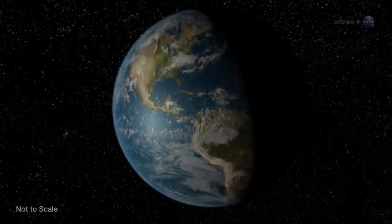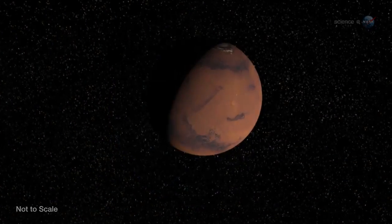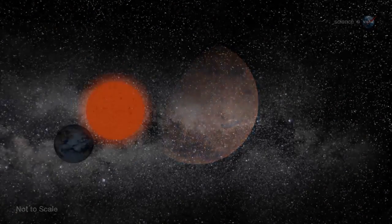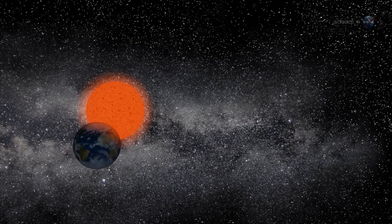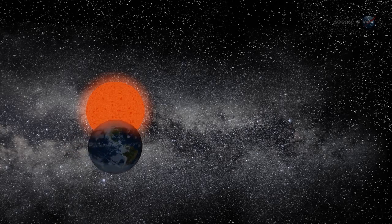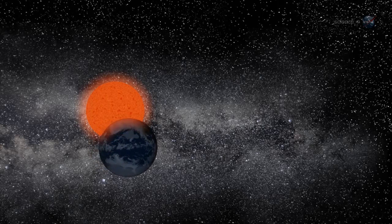Mercury, Venus, Earth, and possibly even Mars could be engulfed. The fate of Earth is not a certainty, however. Some researchers believe that Earth's orbit might spiral outward, keeping the planet at a safe distance from the approaching inferno.